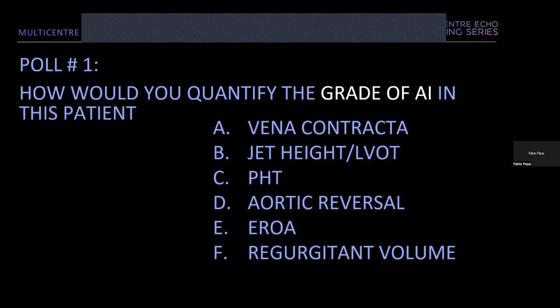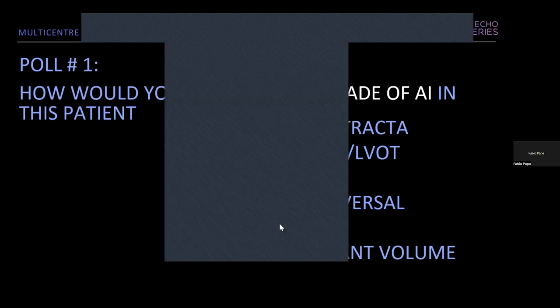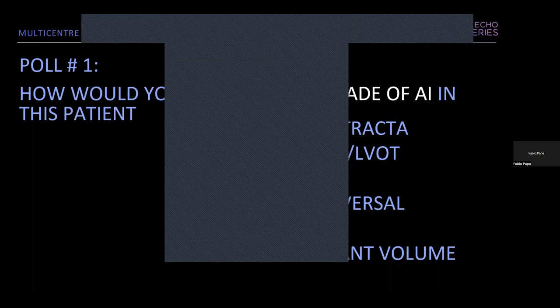Sharing the poll results: 24% said vena contracta, 29% said the ratio of jet height to LVOT diameter, 10% pressure half-time, 33% arch reversal, and 5% regurgitant volume.